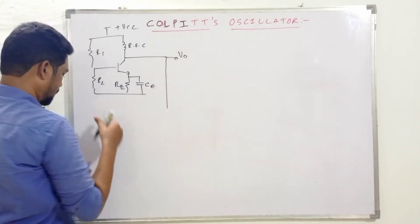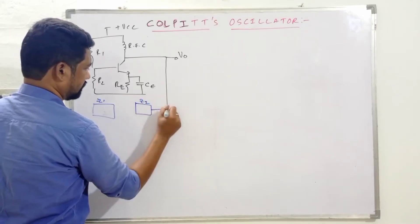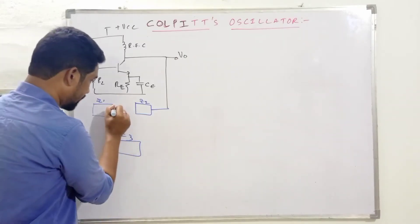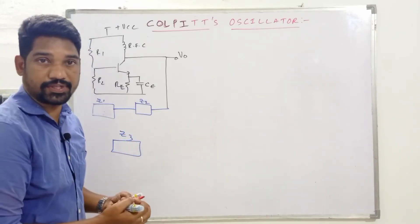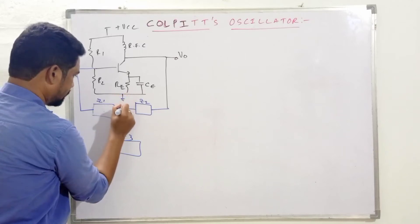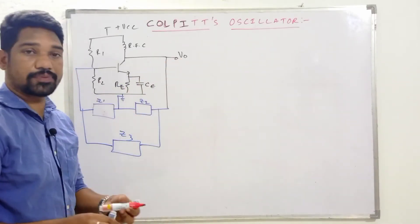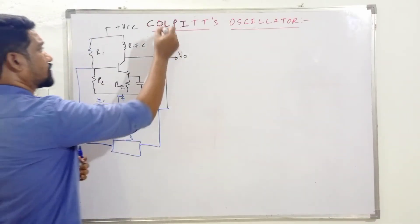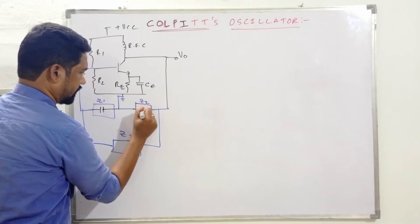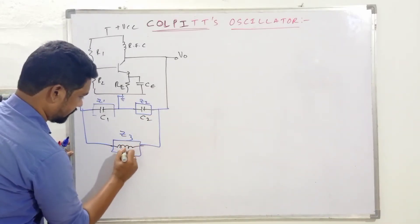We collect the output voltage Vco at this point. Now, focusing on the tank circuit: we have Z1, Z2, and Z3. By changing the impedance combination, the general LC oscillator takes the form of either a Hartley or a Colpitts oscillator. For a Colpitts oscillator, Z1 and Z2 are capacitors — named C1 and C2 — and Z3 will be an inductor with inductance L.